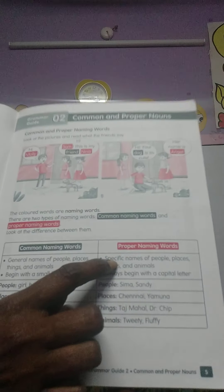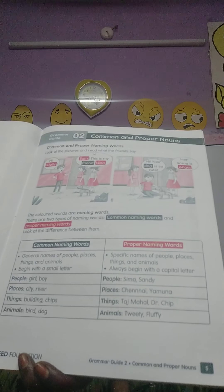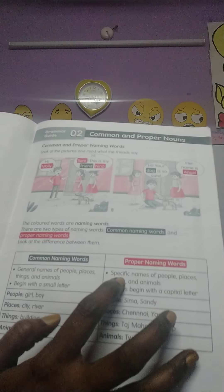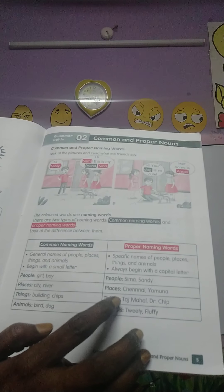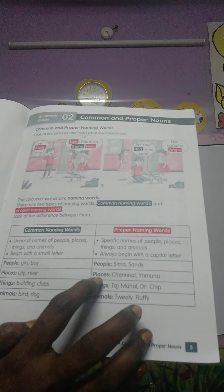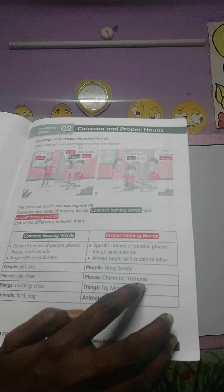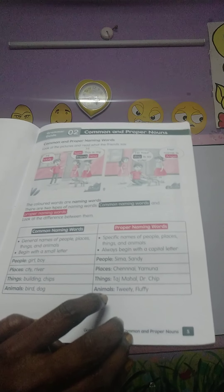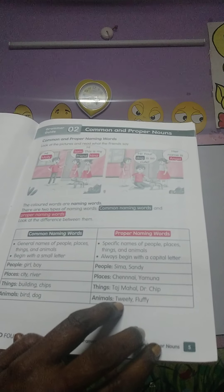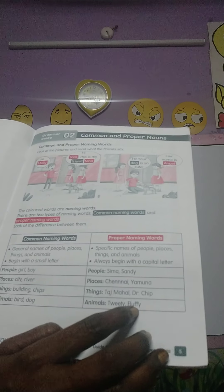Now we are going to learn about proper nouns — proper naming words. It will always start with a capital letter, and we have specific names. For people: Saima, Sandy, Advait, Benihin, like that. Places: Chennai, Yamuna, Guduvancheri, Tambaram. Things: Taj Mahal, Dr. Chip, Chocolate Kid School. Animals: Tweety, Pluffy, Buddy. Like that we have specific names.